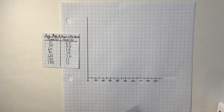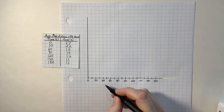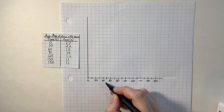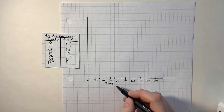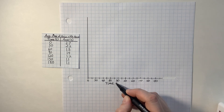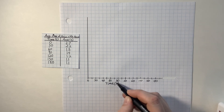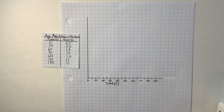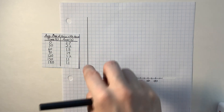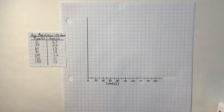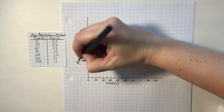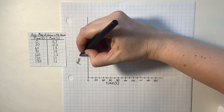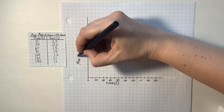I want to label this axis. I'm going to write 'time' and I need to say what units — so this is seconds, and I write 's' in parentheses. Your unit goes in parentheses. My mass is going to be along the y-axis, and I always want to put my units in parentheses.